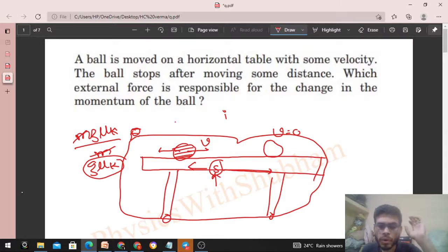Abhi bhi ball kuch distance travel karne ke baad rest mein aa jaegi. Then joh friction force laga raha hai is ball pe, that is an internal force. So iska momentum change nahi hona chahiye system ka by the conservation of momentum, right? So iska matlab, again, is system pe ek external force laga raha hai.